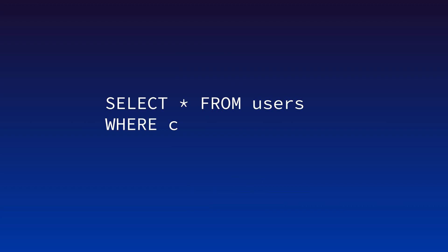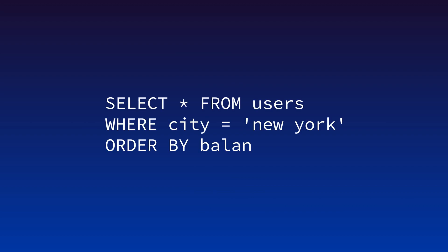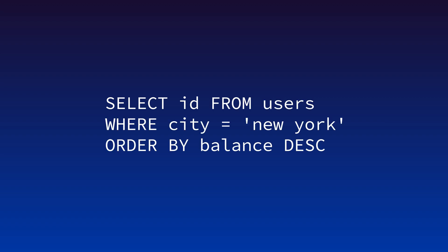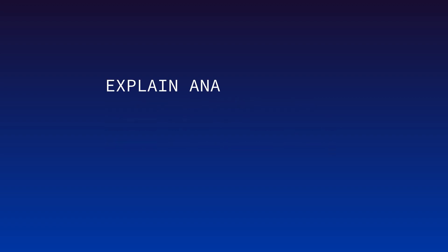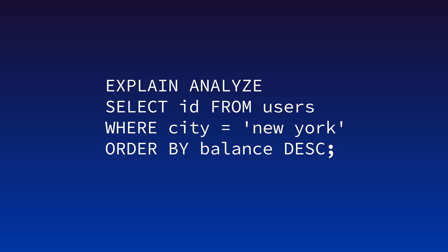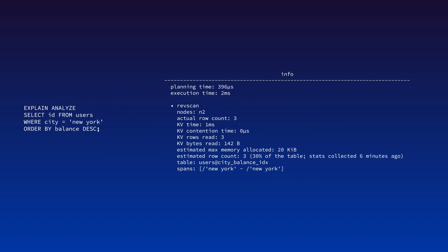In our example query, we're pulling all of the data for the relevant rows. But in real life, often we might not really need the information from each column. Imagine, for example, that we just wanted to get the IDs for each New York user sorted by their account balance. When we EXPLAIN ANALYZE this query, we can see that we're down to a single step thanks to our index and the fact that we're now pulling only the data that we actually need.